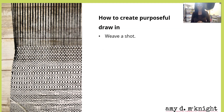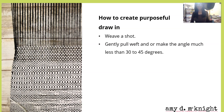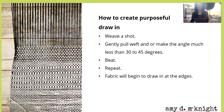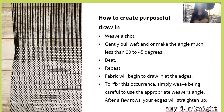So how do you create purposeful draw-in? You're going to weave a shot, then gently pull the weft or make the angle much less than 45 or 30 degrees, then beat. Repeat that and the fabric will begin to draw in at the edges. To fix this, simply begin weaving with the appropriate weaver's angle and after a few rows your edges will straighten up.